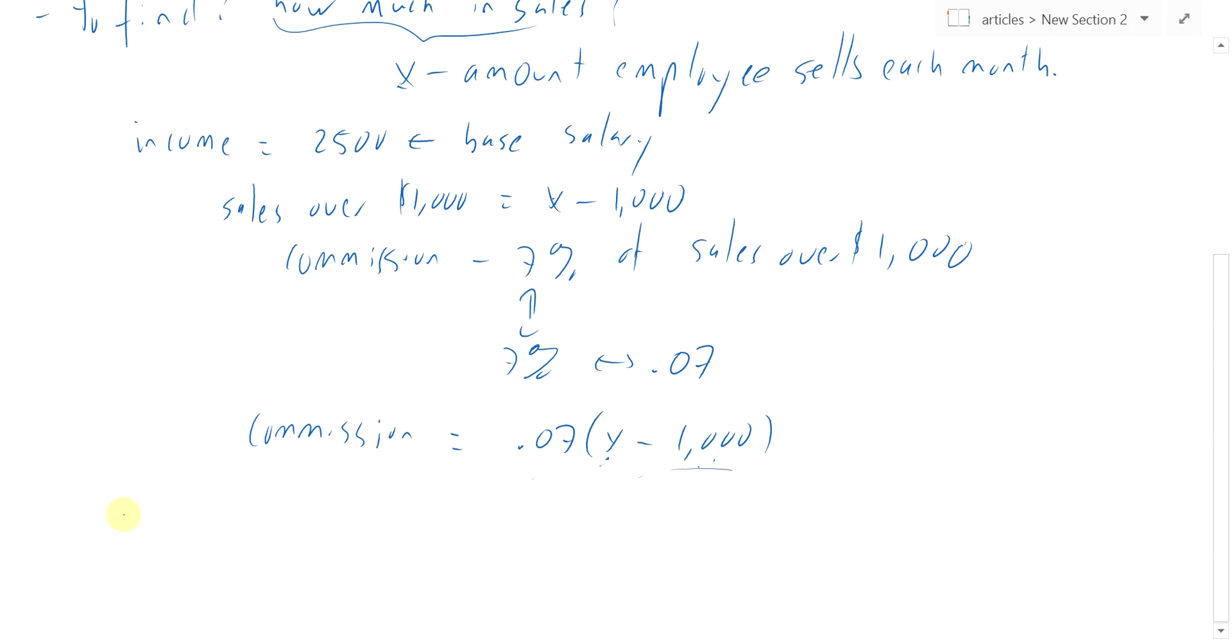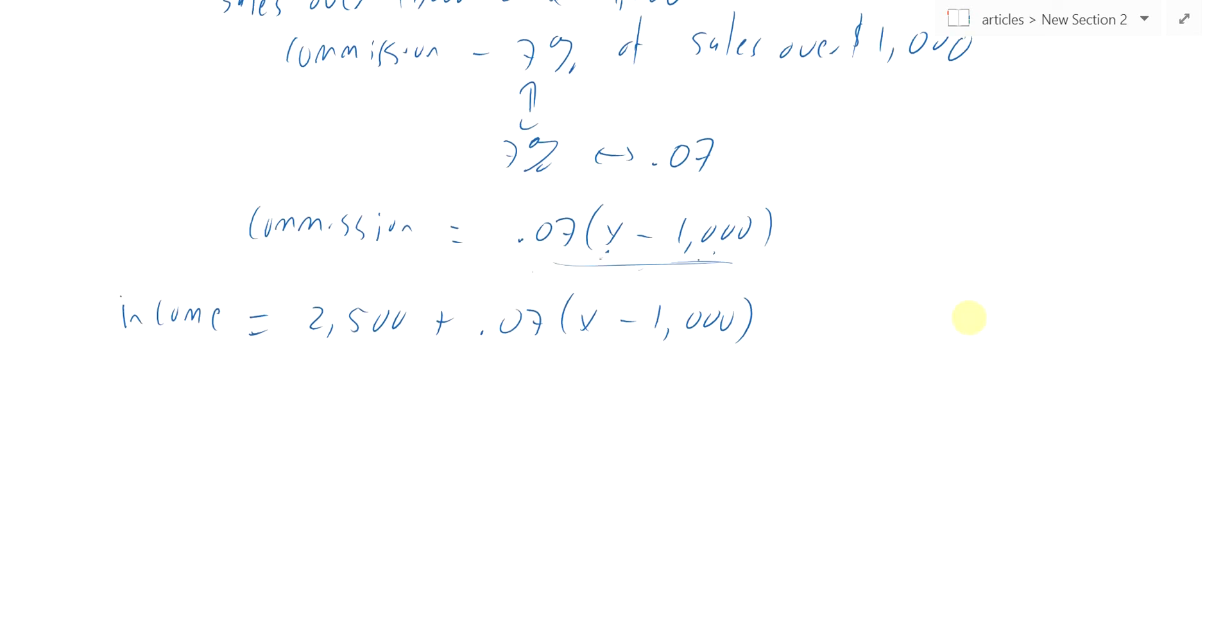So what is their income? Their income has two parts: the $2,500, that's the base salary, plus their commission, which is this complicated thing. So that's what their income is. And this person wants to make $4,000. So what do I need to aim for? What does X have to be for the income to equal $4,000?